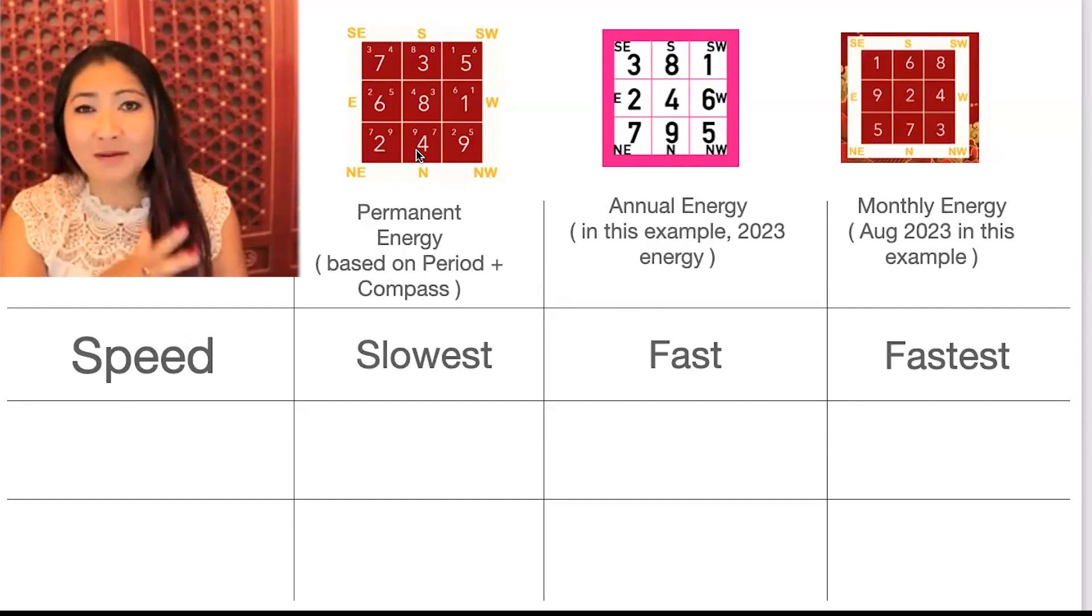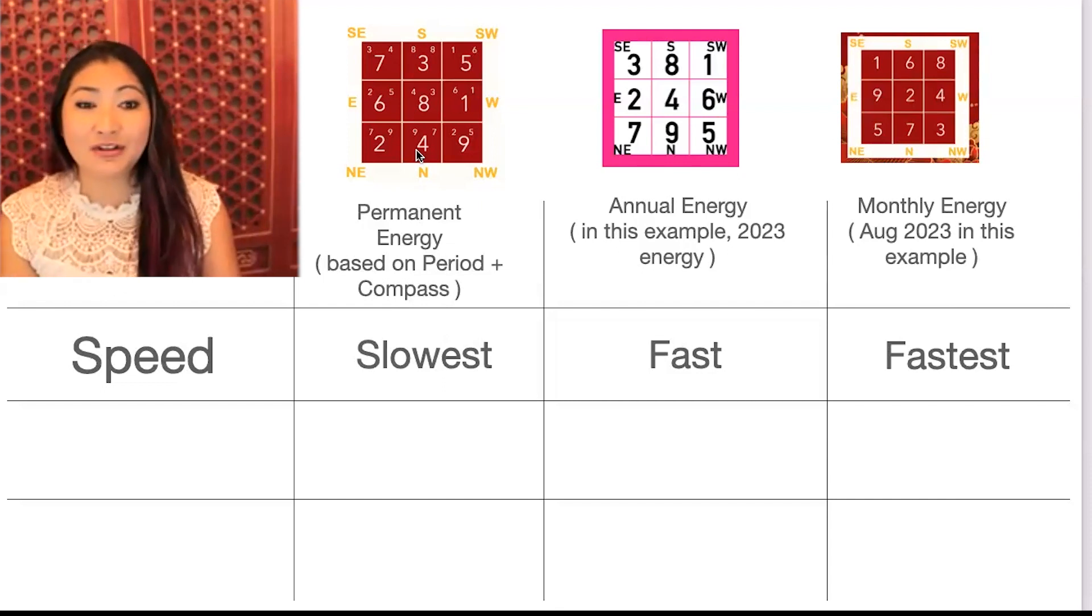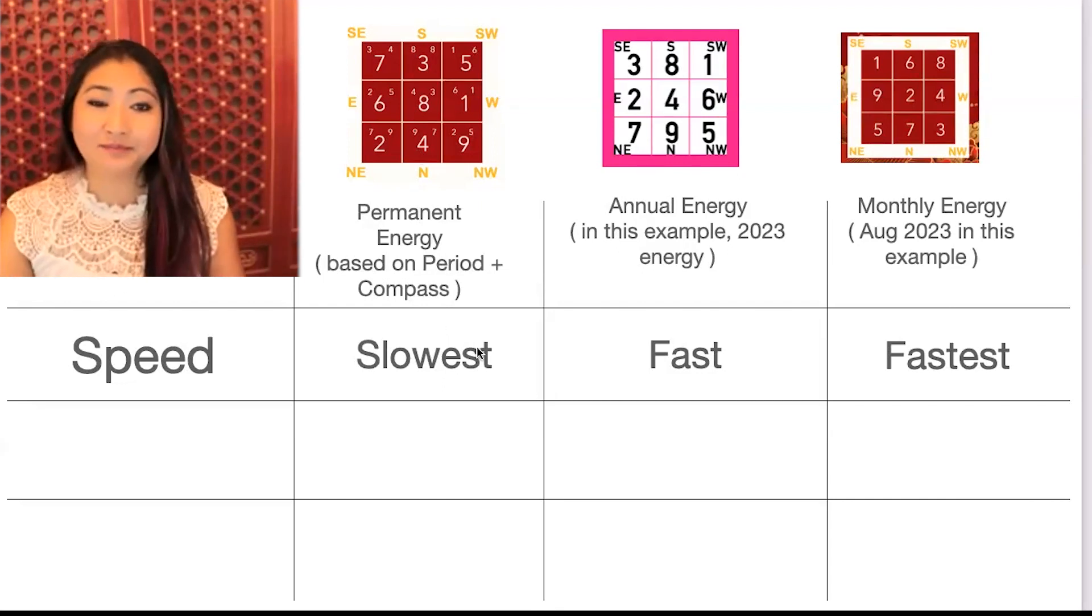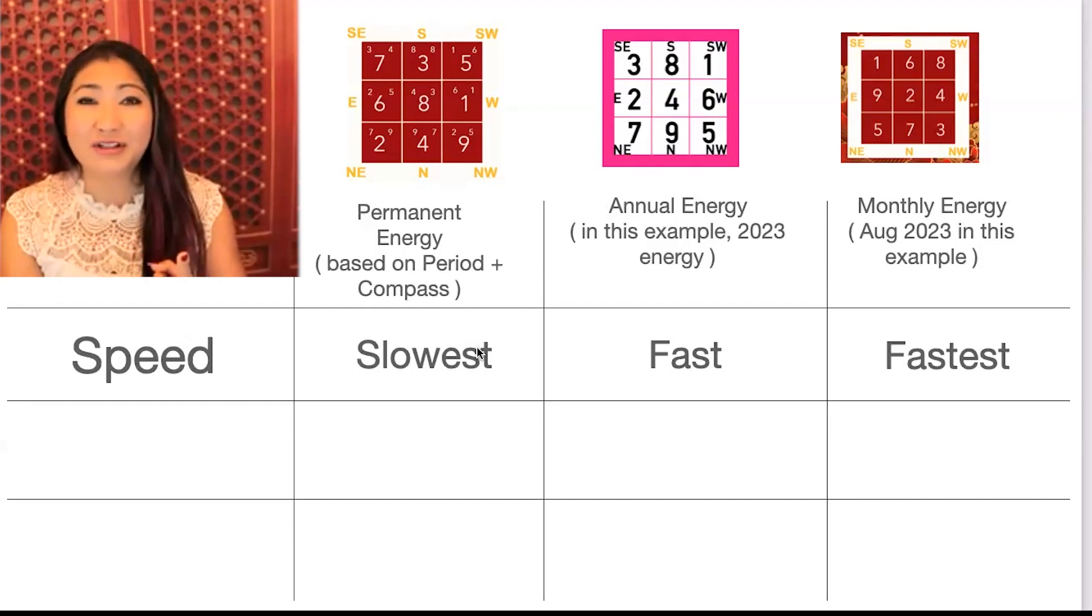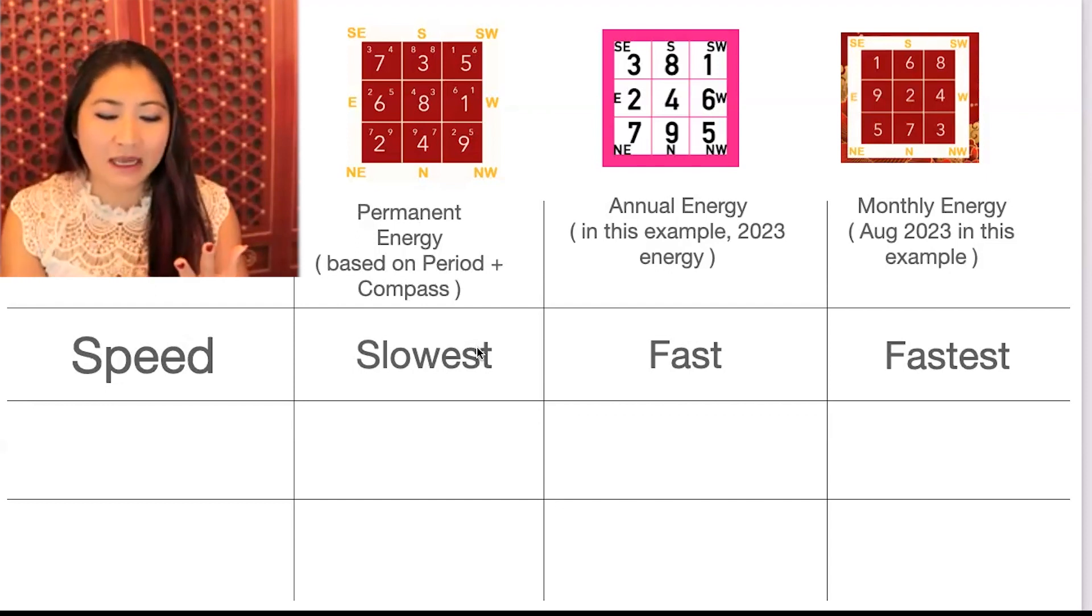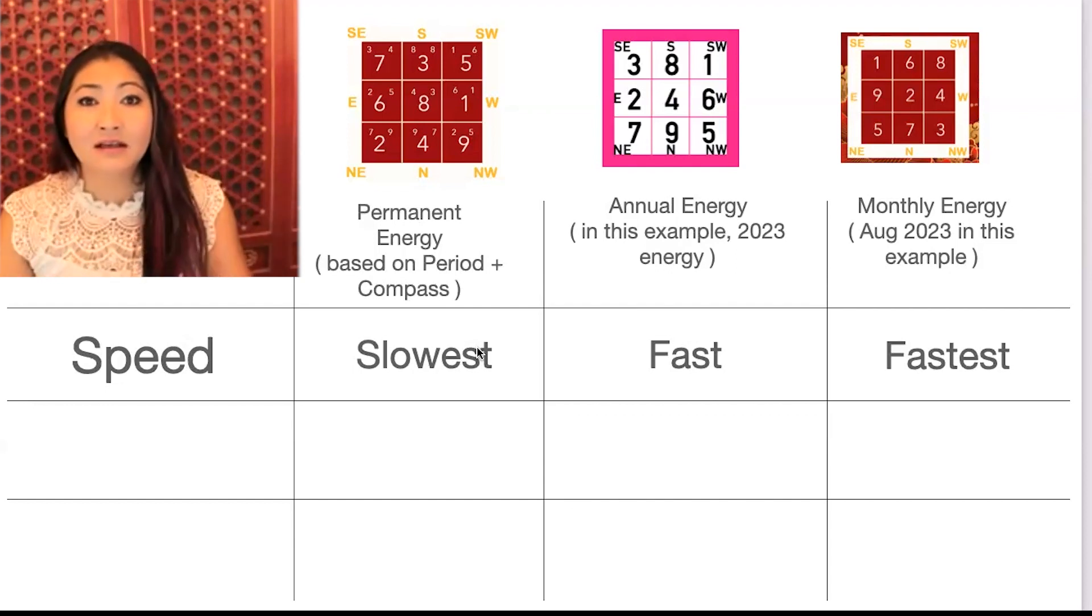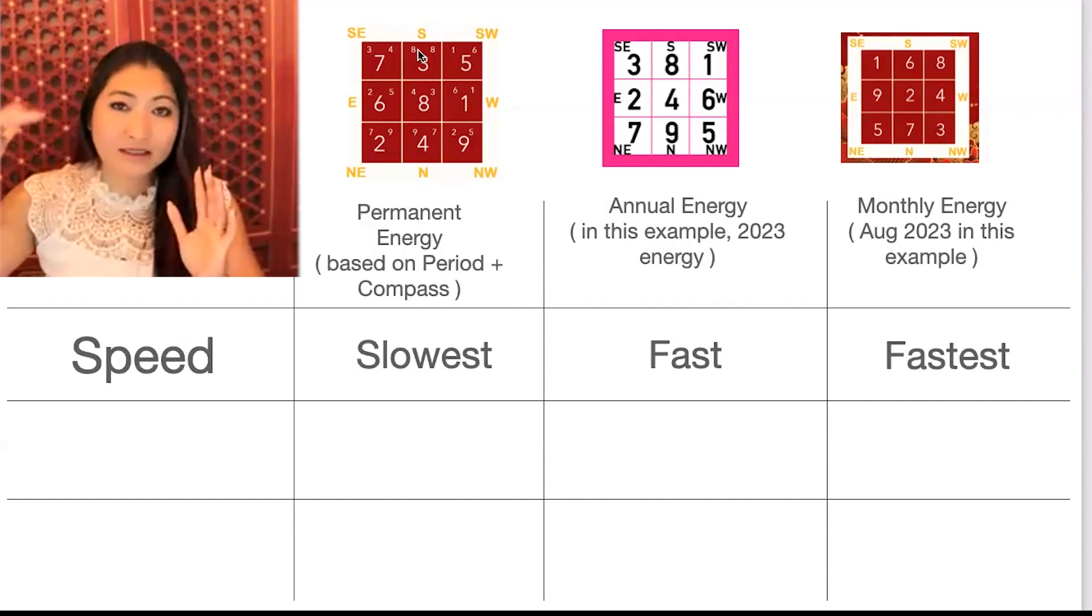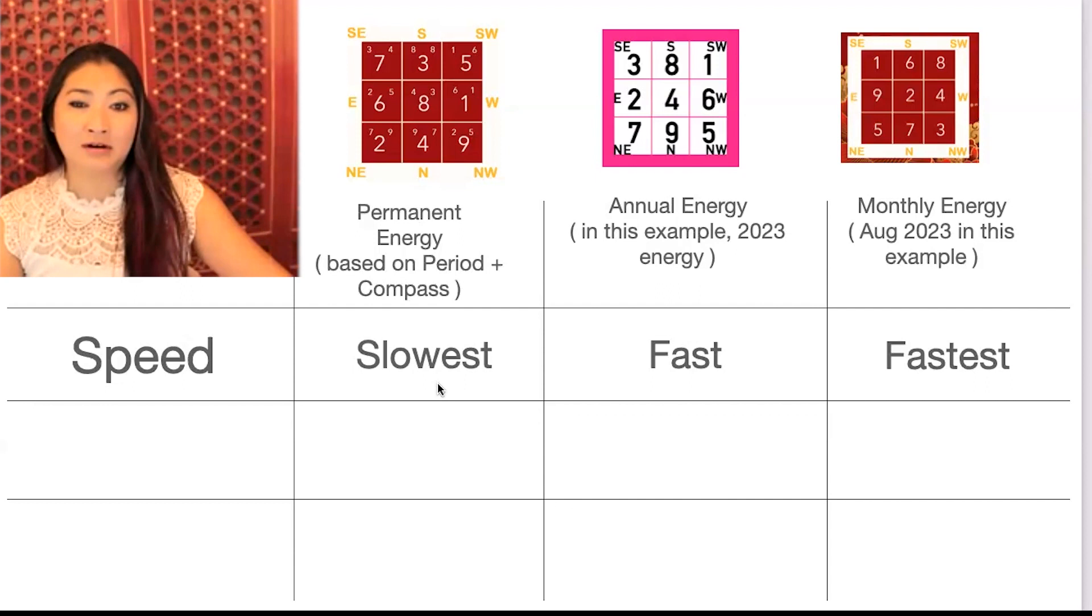The positive energy, I find my students and my clients seem to be able to see the results of that much faster than the permanent negative energy. But when it comes to serious illness like cancer or brain tumor or life-altering events, usually they are linked back to the permanent energy, and it takes the slowest for it to manifest in our lives.